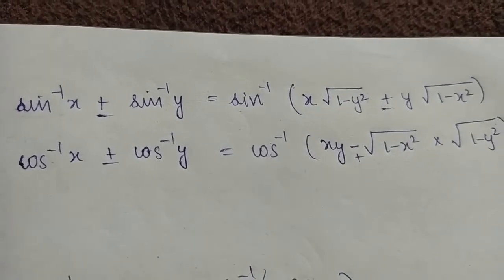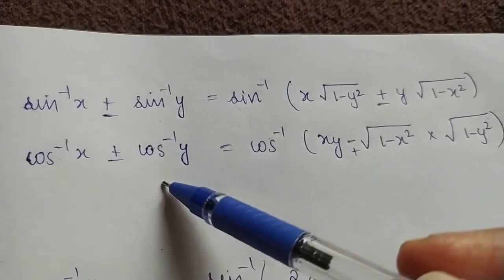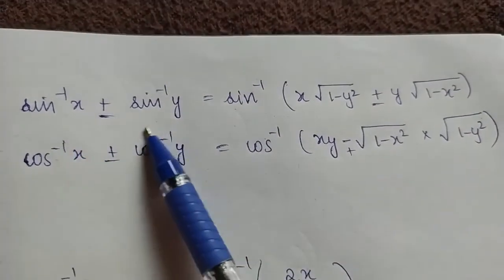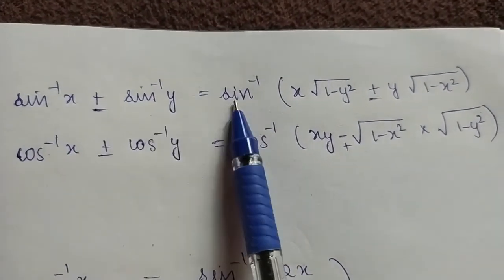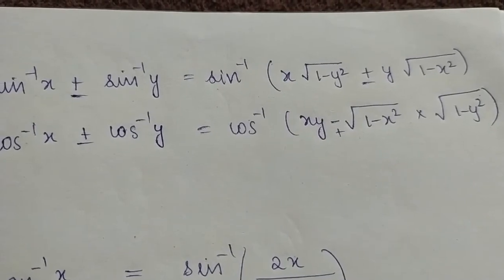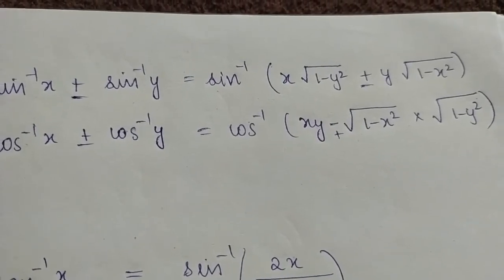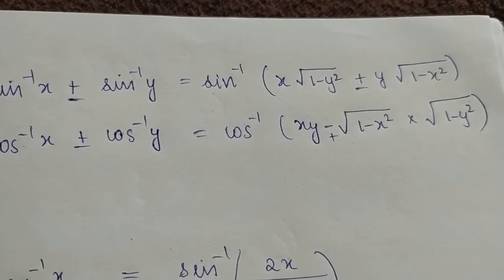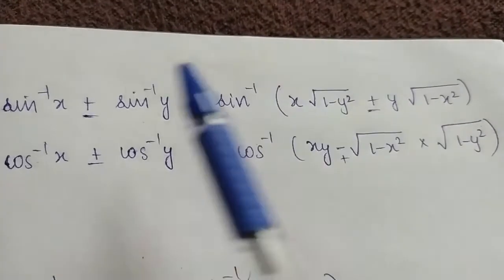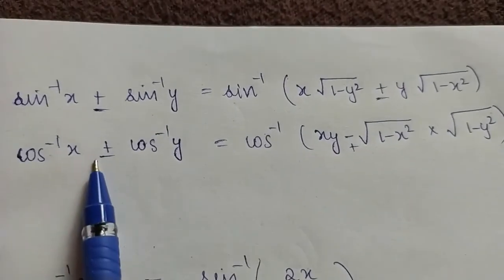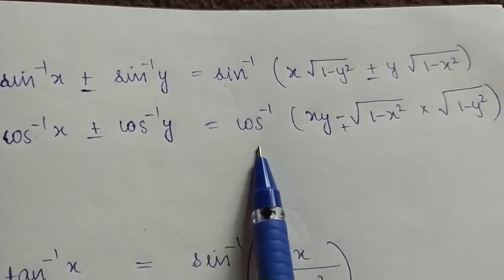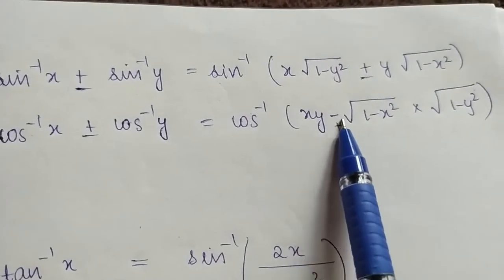The formula for sin inverse x + sin inverse y is: sin inverse[x·√(1 − y²) + y·√(1 − x²)]. Also, cos inverse x + cos inverse y = cos inverse[xy − √(1 − x²)·√(1 − y²)].